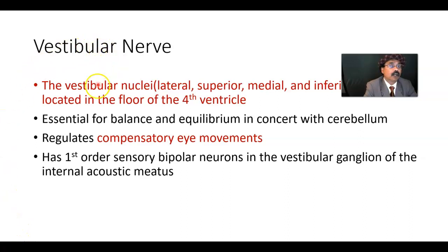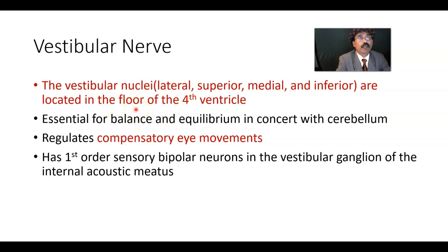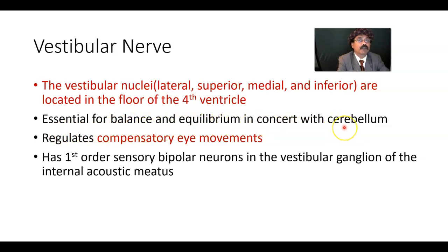The vestibular nerve has four nuclei: lateral, medial, superior, and inferior nuclei. These nuclei are located in the floor of the fourth ventricle. They are essential for balance and equilibrium in concert with the cerebellum.